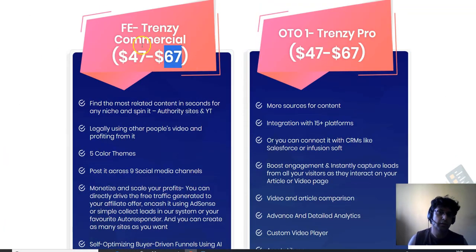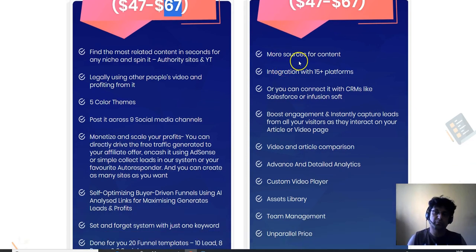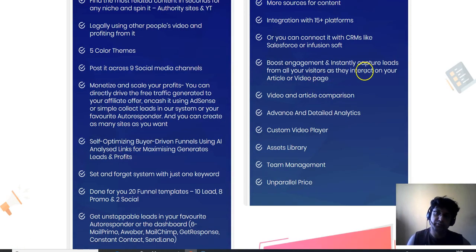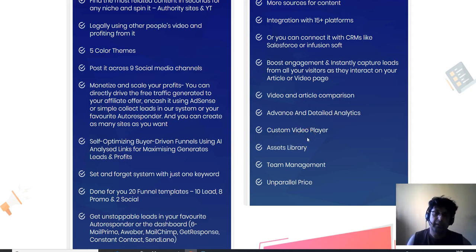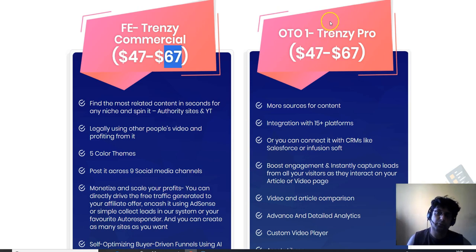OTO 1 is Trendsy Pro, priced at $47. It gives you more content resources, integration with 15-plus platforms, CRM connections like Salesforce and Infusionsoft, boosted engagement with instant lead capture from visitors interacting on your article or video pages, advanced detailed analytics, a custom video player, asset management, team management, and unparalleled pricing.